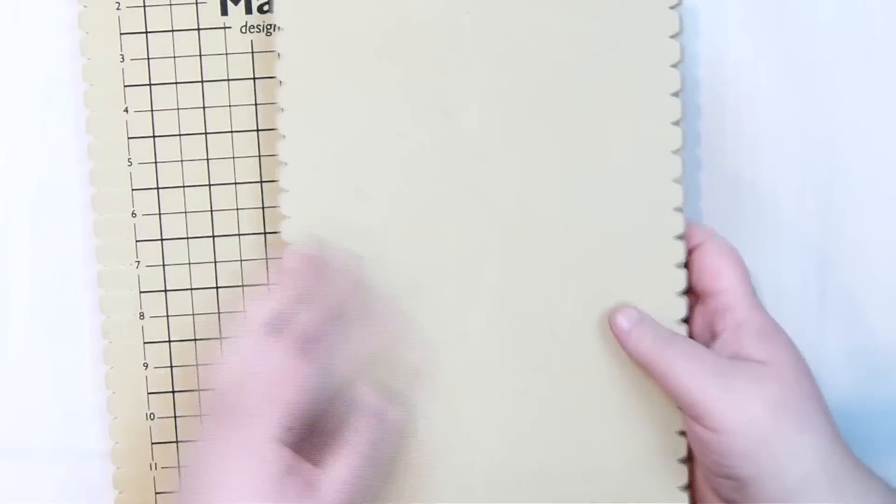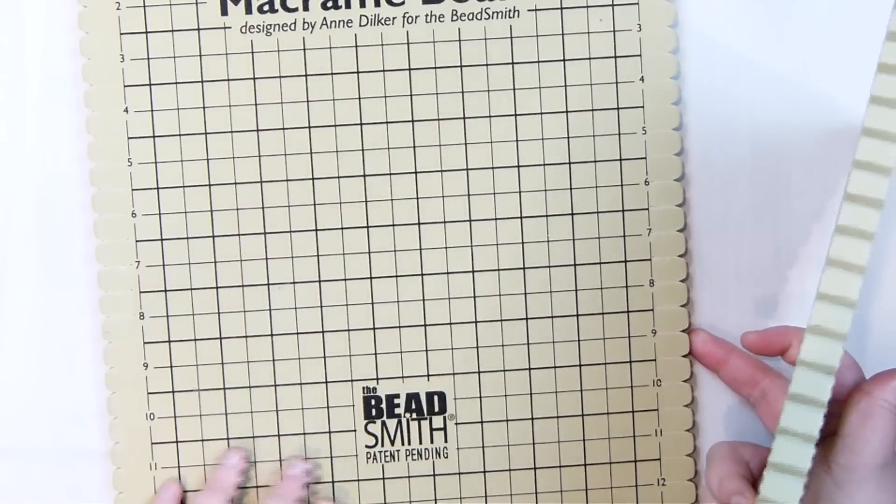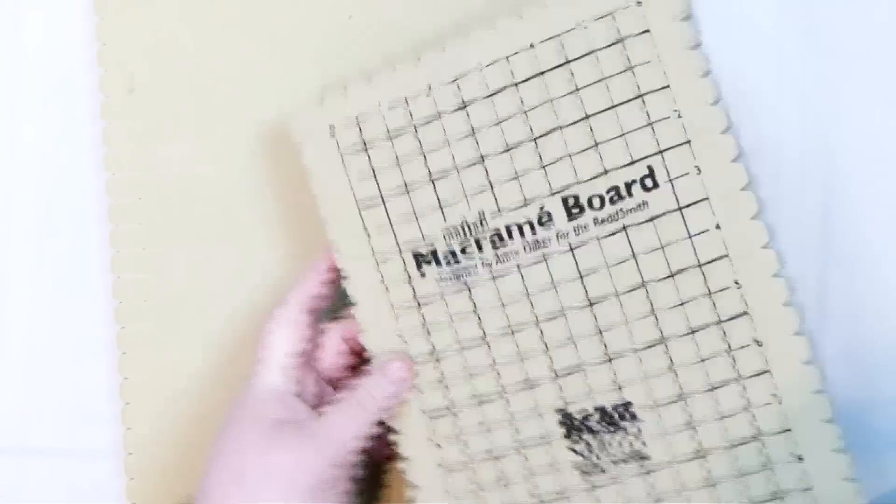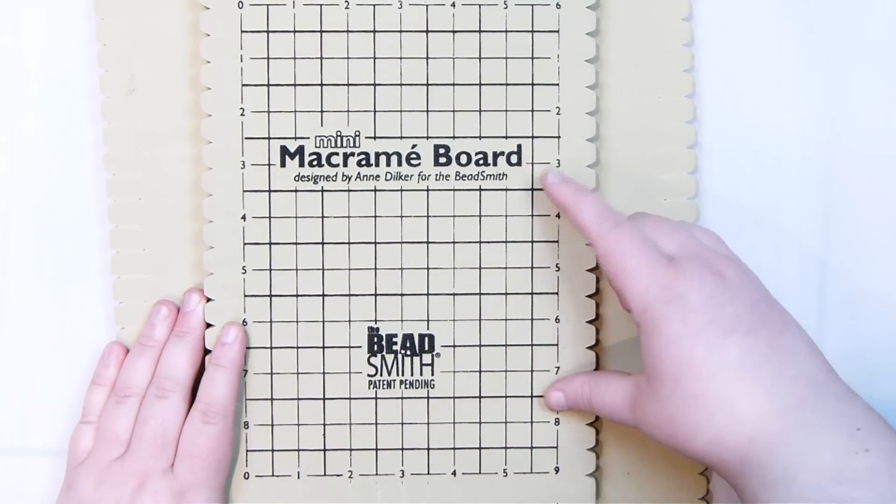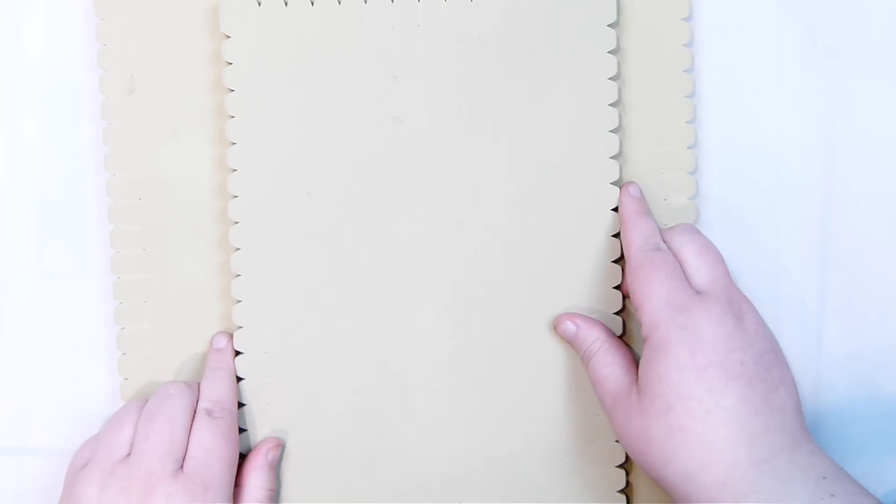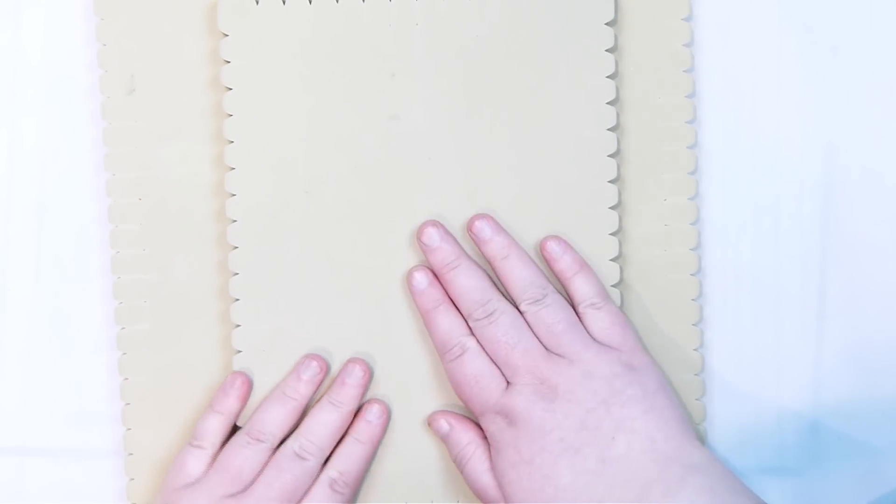They're really handy to use and the back of them are just plain. So obviously you can either work on this side and it actually has a measuring grid, so if you want to use that for actual measuring, or you can work on the back with just a plain page there.